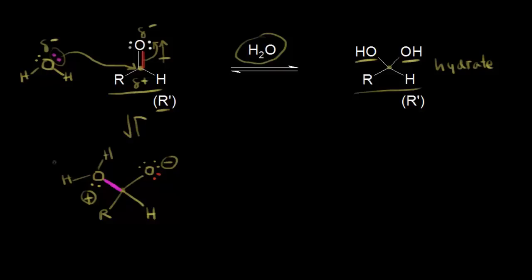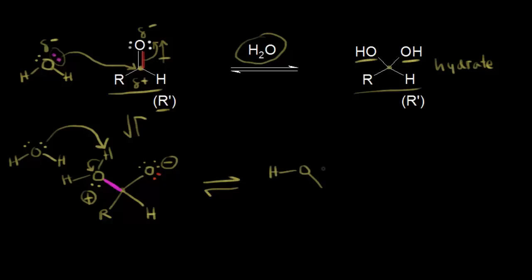Next, we can think about an acid-base reaction. Another water molecule comes along. Water can function as an acid or a base. A lone pair of electrons on water takes this proton and leaves those electrons behind on our oxygen. Let's draw the result of that acid-base reaction. We now have our oxygen bonded to only one hydrogen, and the negatively charged oxygen is still on the right, with the R group and hydrogen. We've picked up another lone pair of electrons on that oxygen. We're almost to our final product — we've almost formed our hydrate. We just need to do one more acid-base reaction.